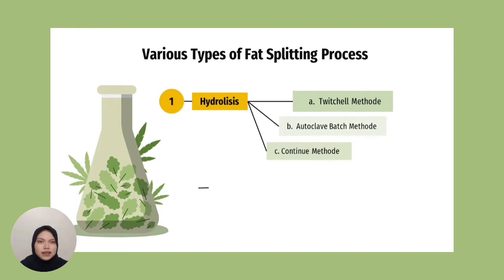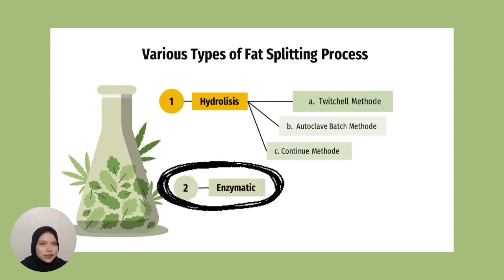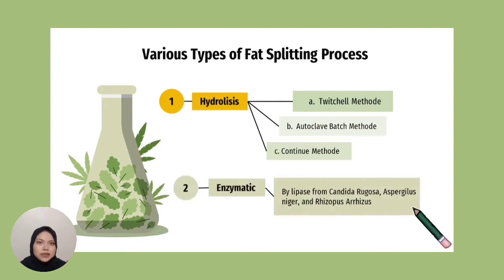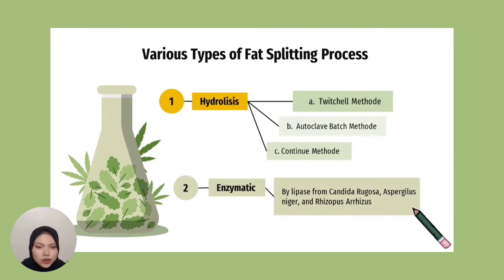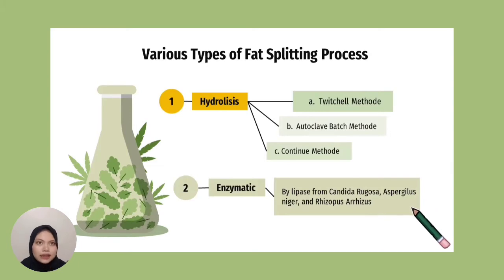Another type of fat splitting process is the enzymatic process. The enzymatic process can be done using the enzyme lipase from Candida rugosa at a temperature range of 26 to 40 degrees Celsius, with a period of 48 to 70 hours, achieving a breakdown yield of approximately 98%.